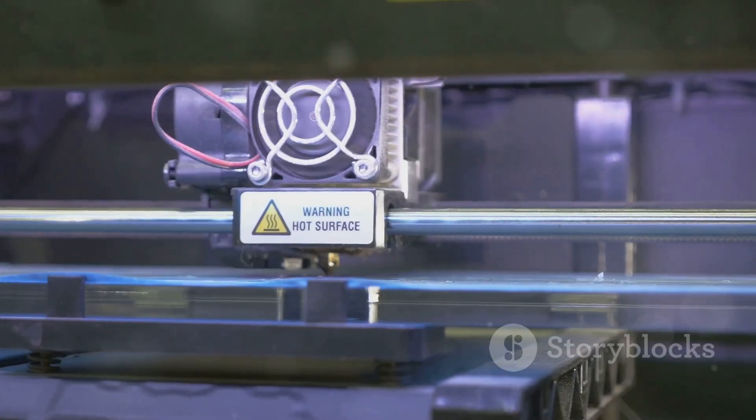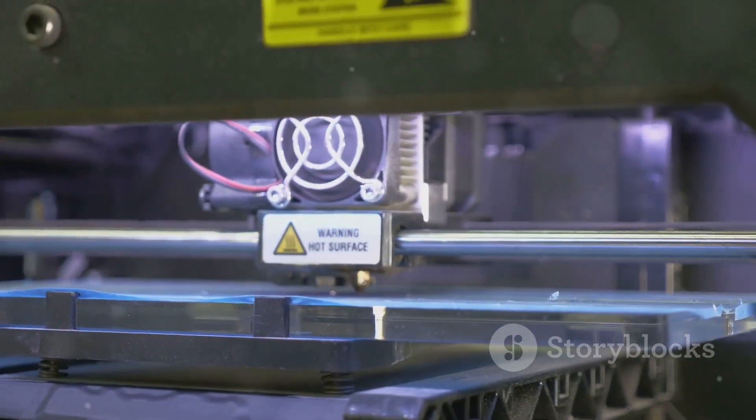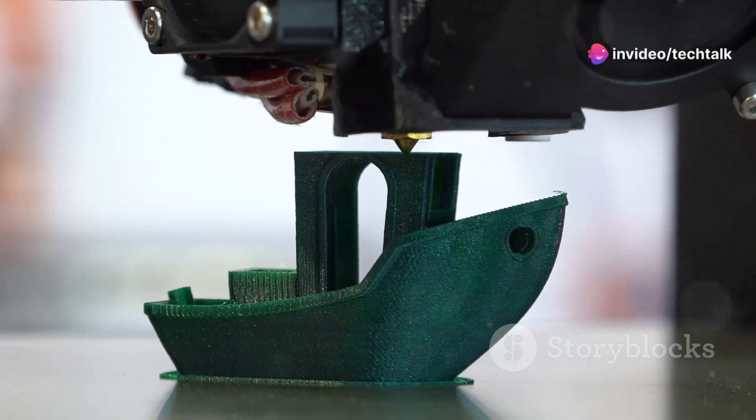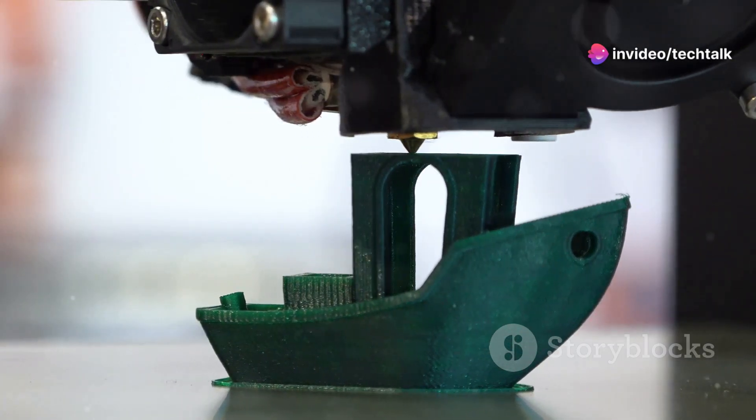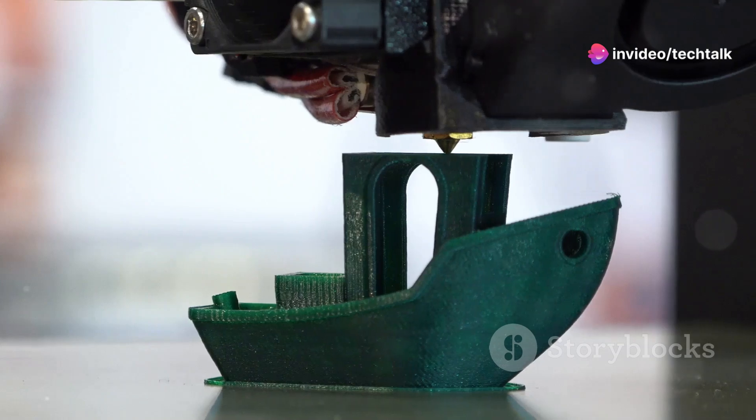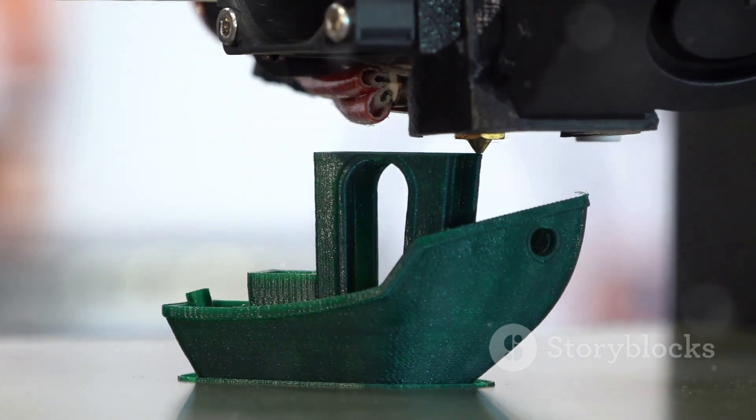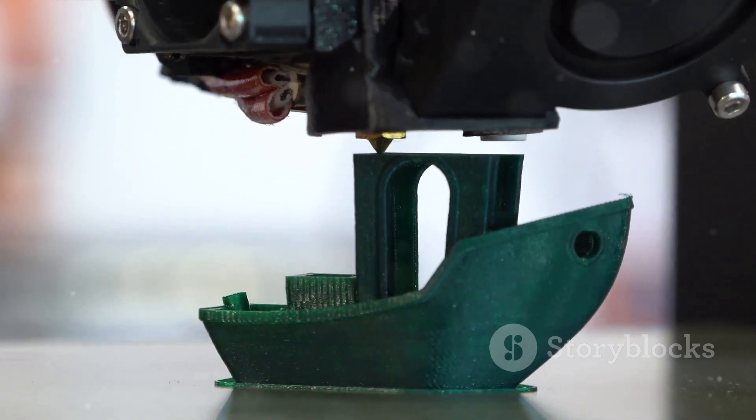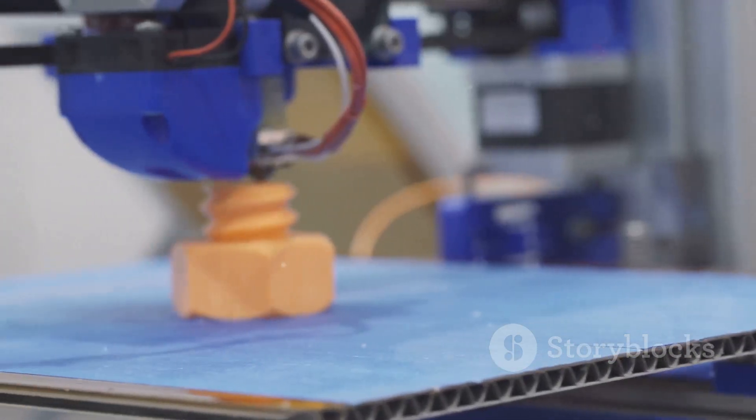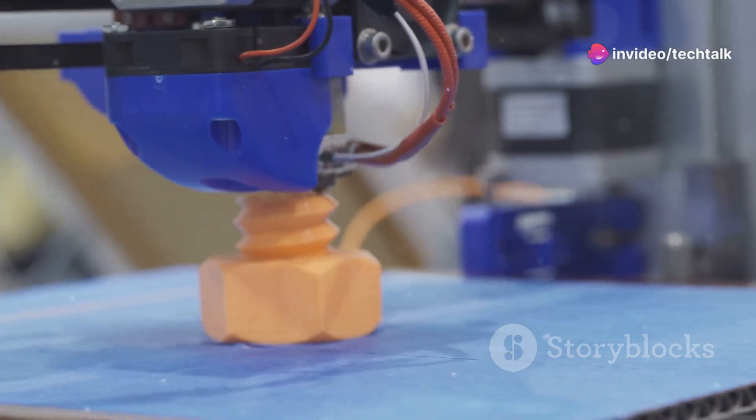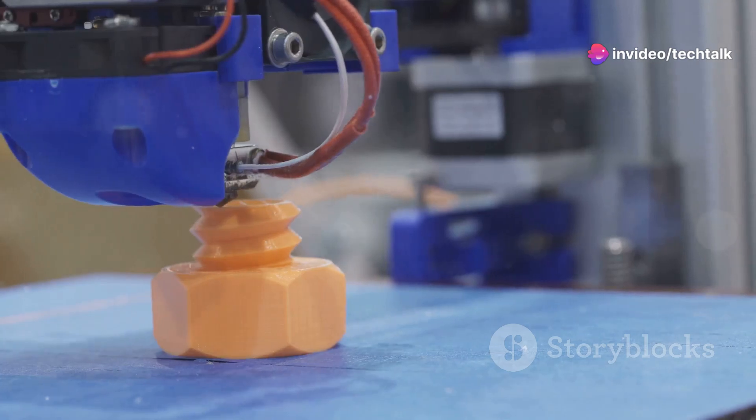Section 3: Transforming Production from Prototypes to Products. Initially, 3D printing's primary use in manufacturing was rapid prototyping. It allowed designers to quickly create physical prototypes of their designs, test them, and make necessary iterations. This significantly accelerated the product development cycle, reducing both time and costs.